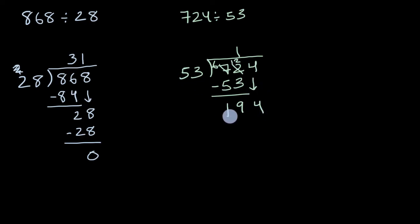So I'm trying to figure out how many times does 53 go into 194. Let's see, 50 would go into 200. I'm just estimating by rounding to the nearest, well, in this case, rounding to the nearest 100. But let's see, if 50 goes into 200 about four times, but this is less than, or exactly four times. This is less than 200, and this is greater than 50. So I'm gonna try three. Three times three is nine. Three times five is 15.